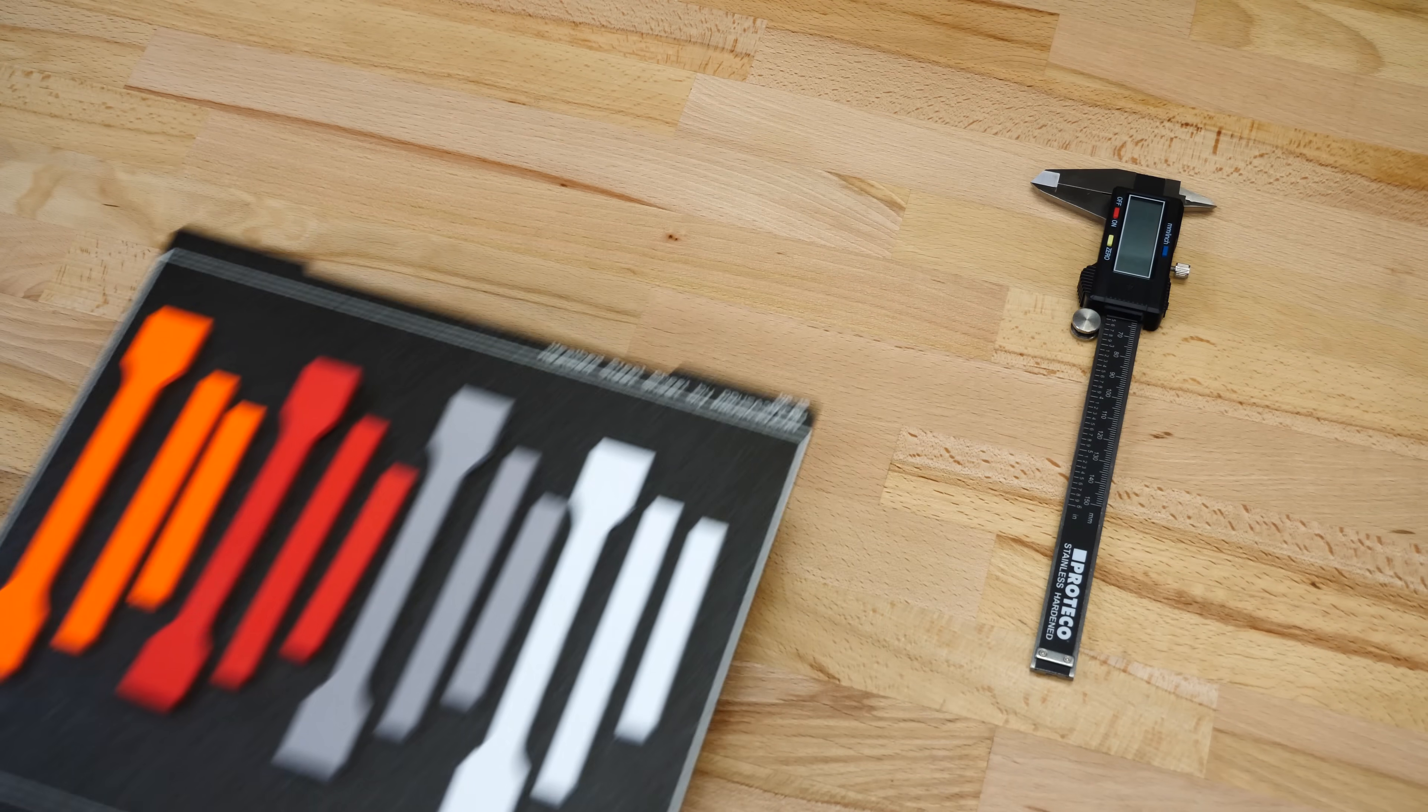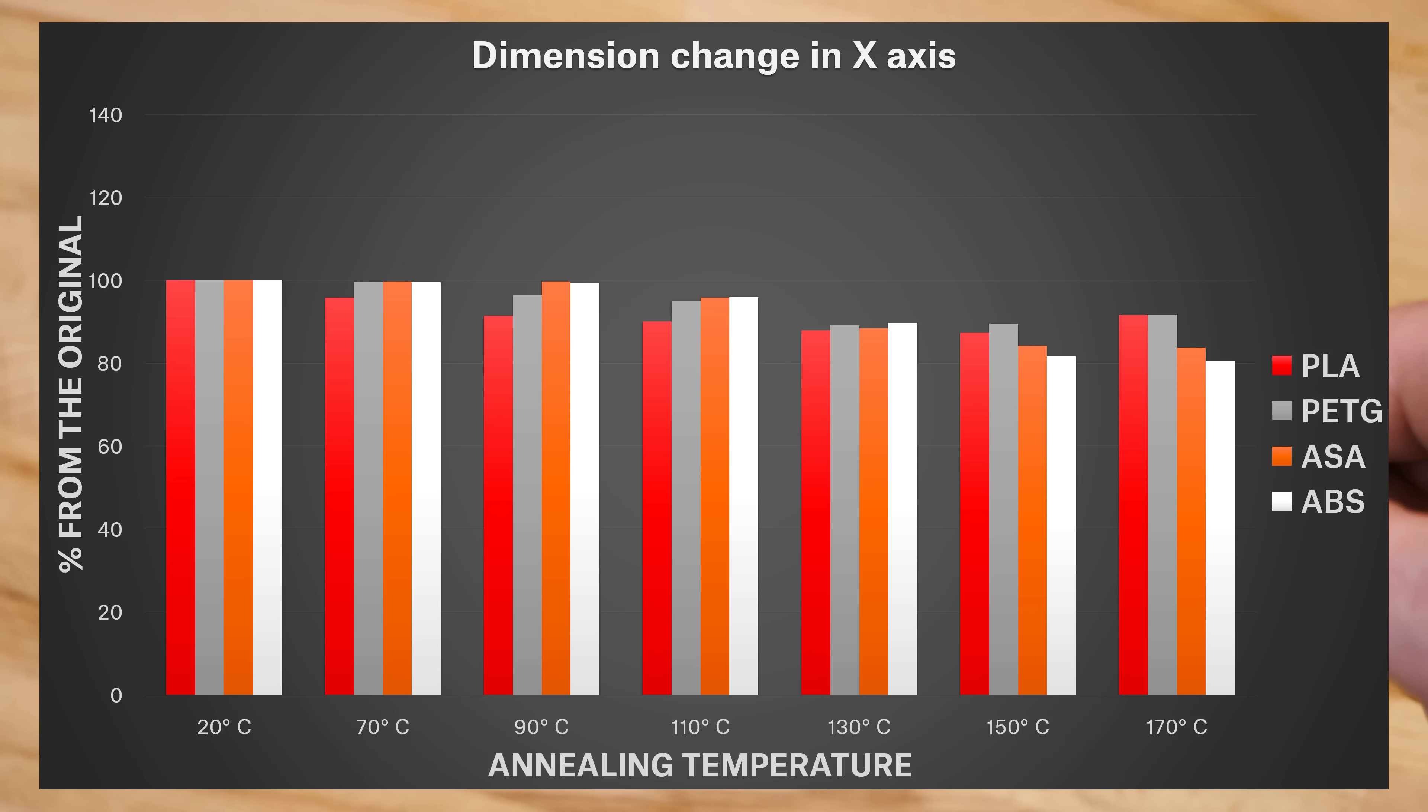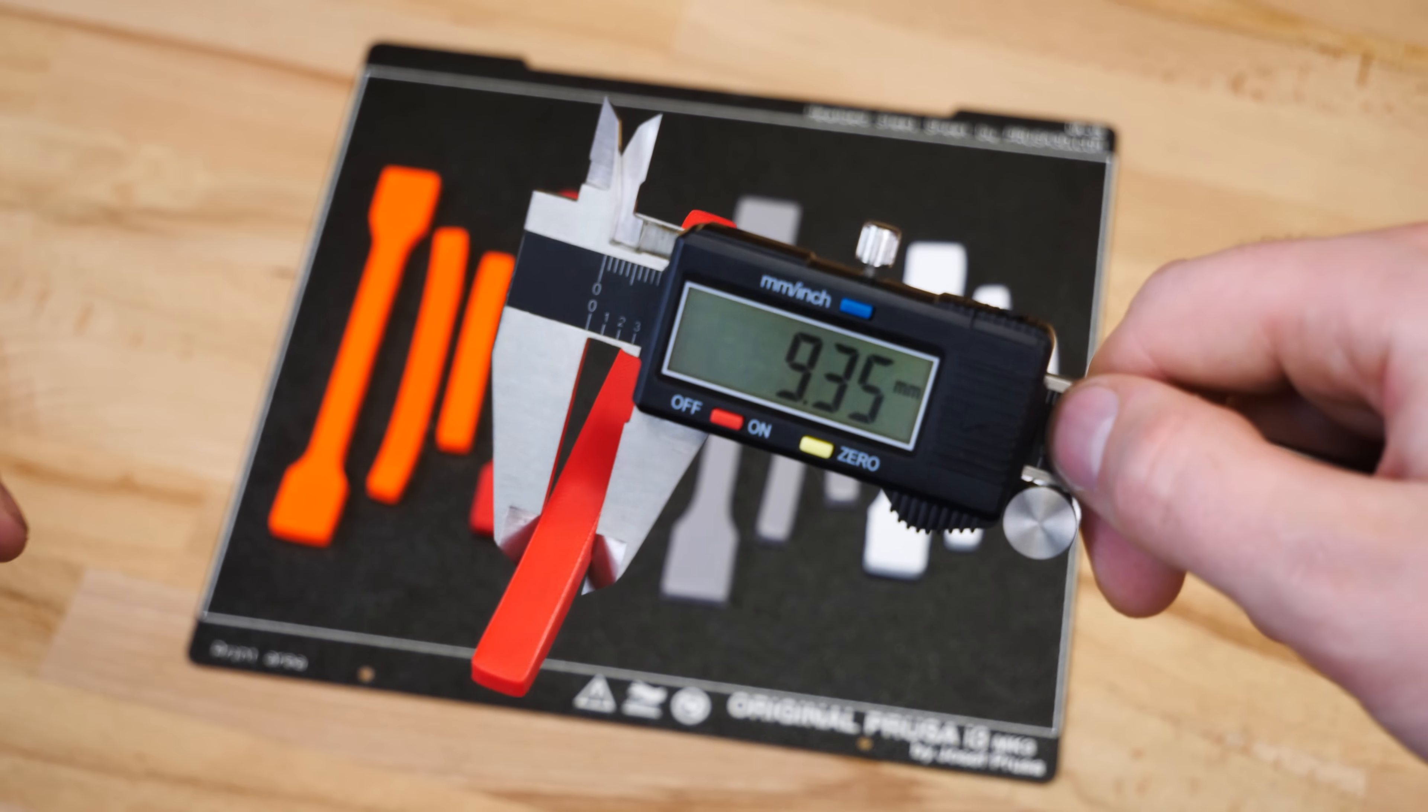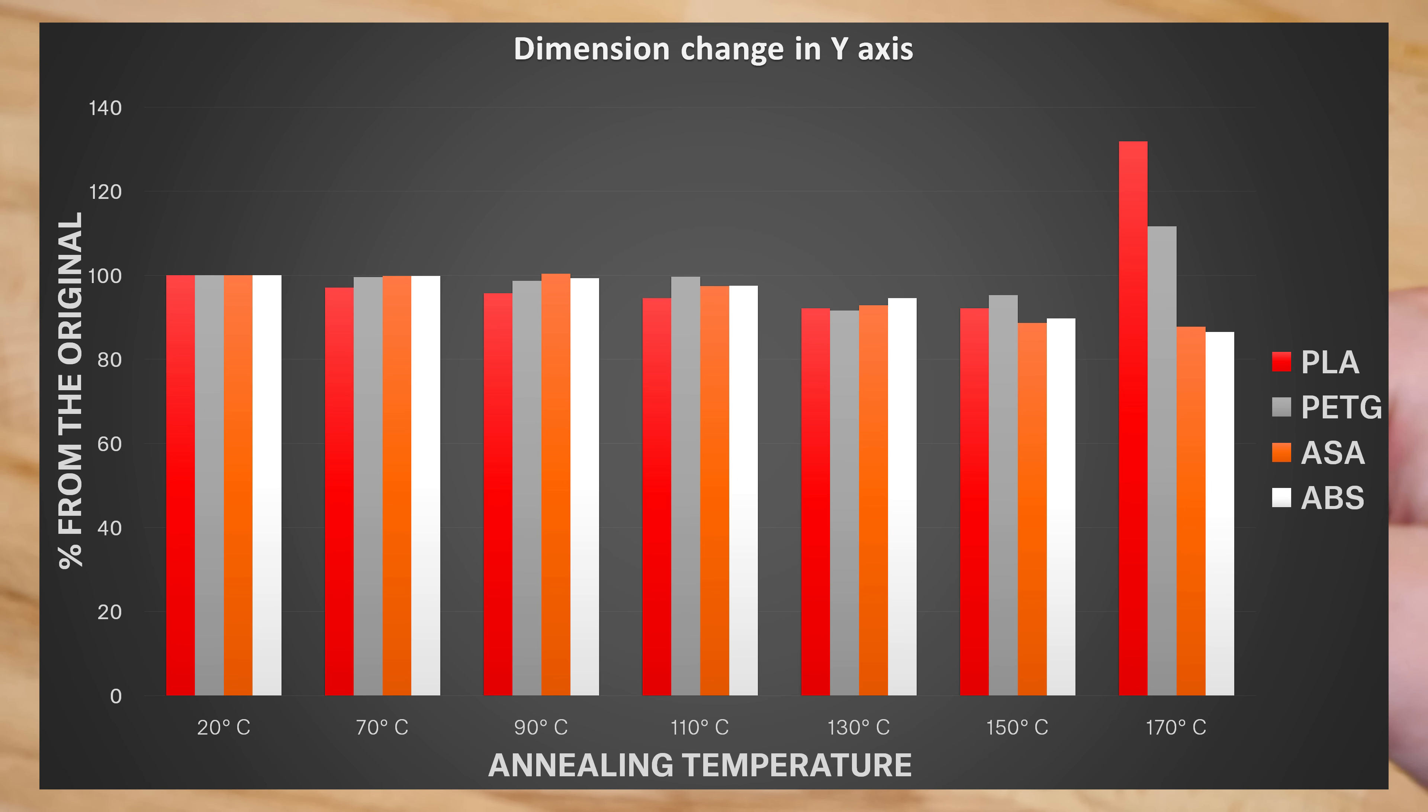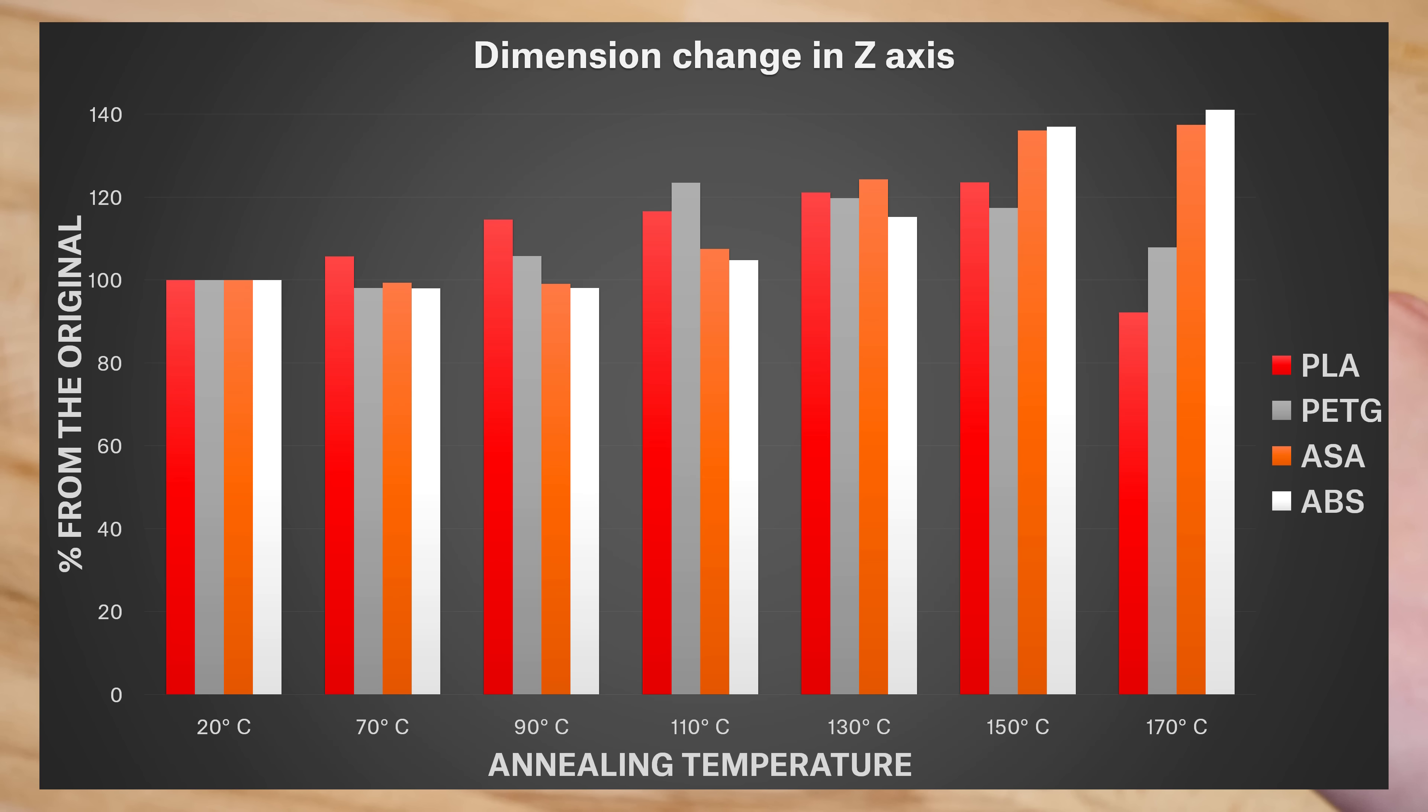In the first test, we observed the change in dimensions caused by annealing. As the temperatures increased, we saw the x- and y-axis shrink more and more. On the other hand, the objects slightly raised in the z-axis. You need to keep this in mind when printing objects with exact dimensions.